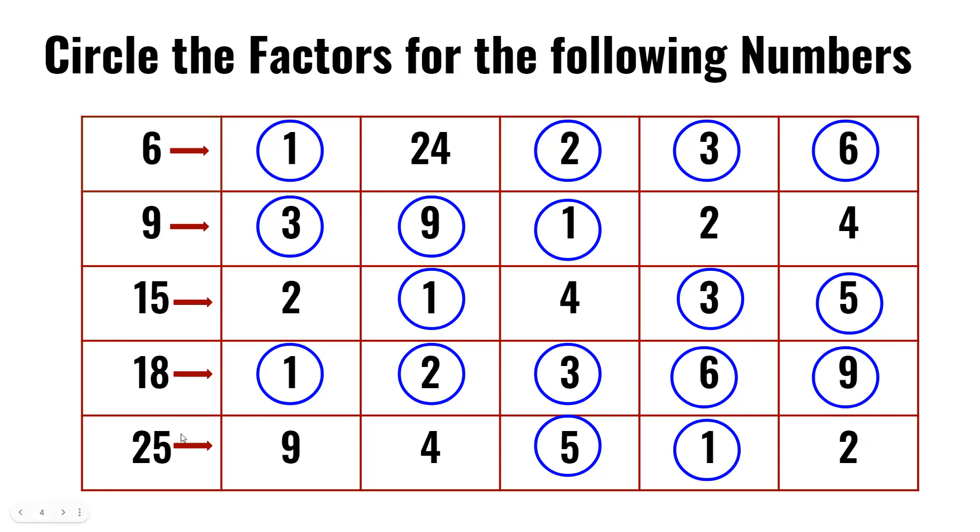In the last row, we have 25. The given numbers are 9, 4, 5, 1, and 2. We all know 1 times 25 is 25, 5 times 5 is 25. So 5 and 1 are some of the factors of 25.